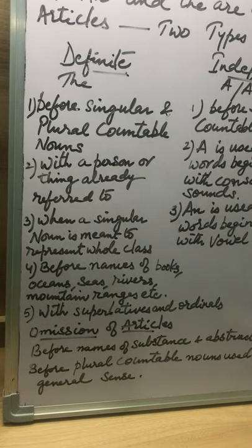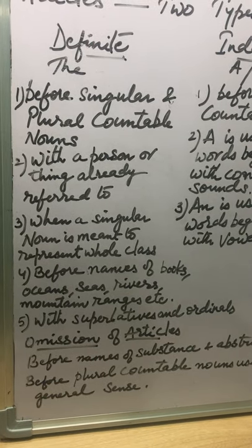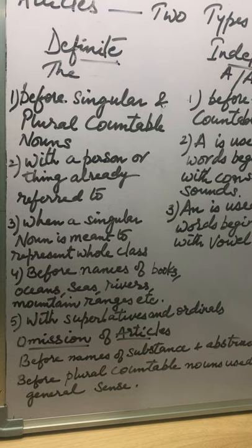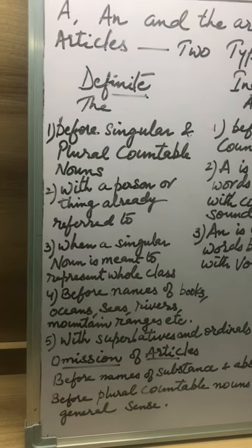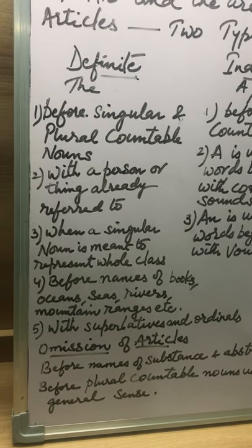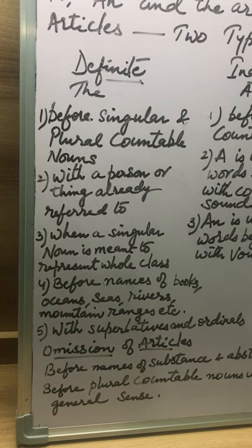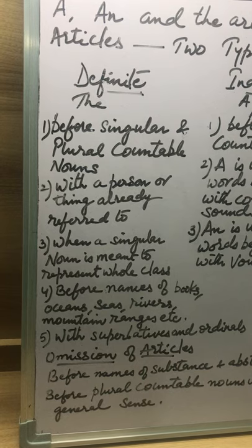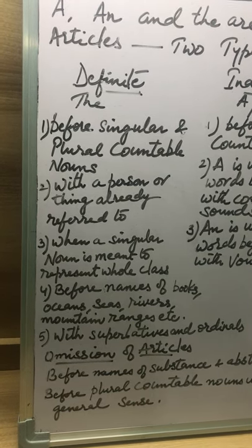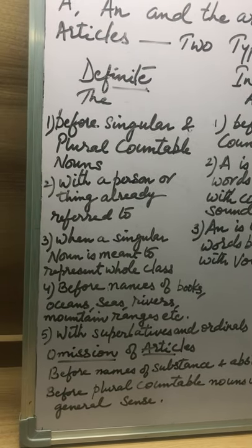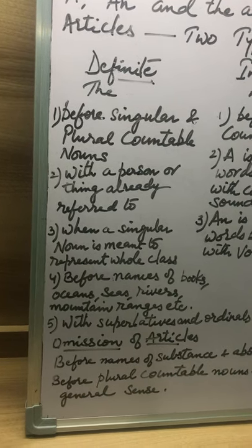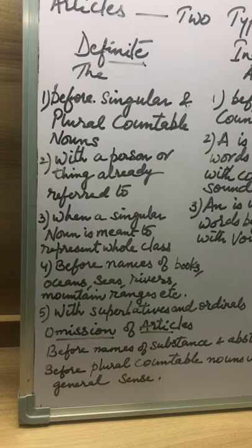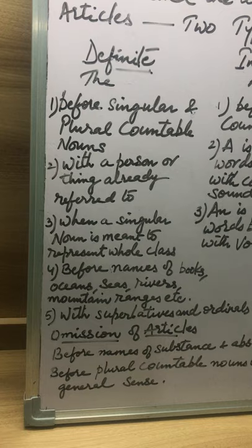The definite article is used with the names of oceans, seas, rivers, mountain ranges, etc. For example, the Pacific, the Indian Ocean, the Ganga, the Brahmaputra, the Sahara Desert. It can also be used with the names of islands, such as the West Indies, and mountain ranges like the Himalayas and the Aravalis. Certain books also take the definite article, such as the Vedas, the Puranas, the Bible, and the Ramayana.